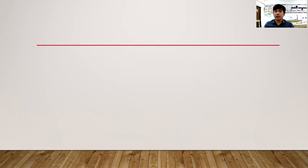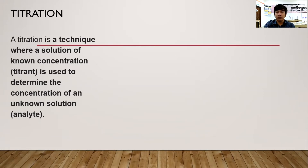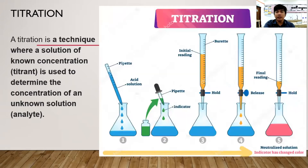The next experiment we conducted is about acids and bases — titration. Titration is a technique where a solution of known concentration, called the titrant (in this case sodium hydroxide), is used to determine the concentration of an unknown solution, the analyte (hydrochloric acid). You observe a neutralization reaction.